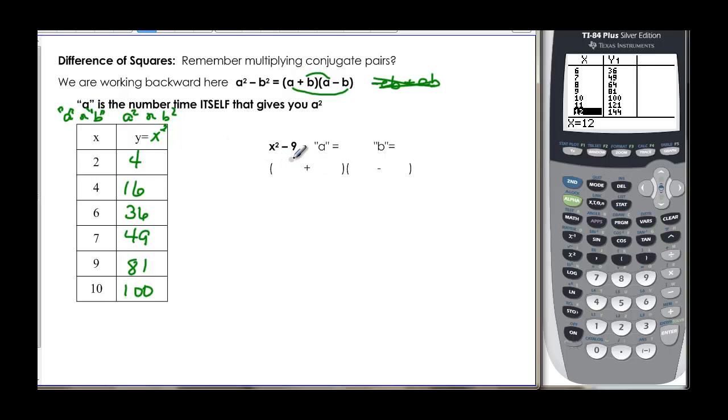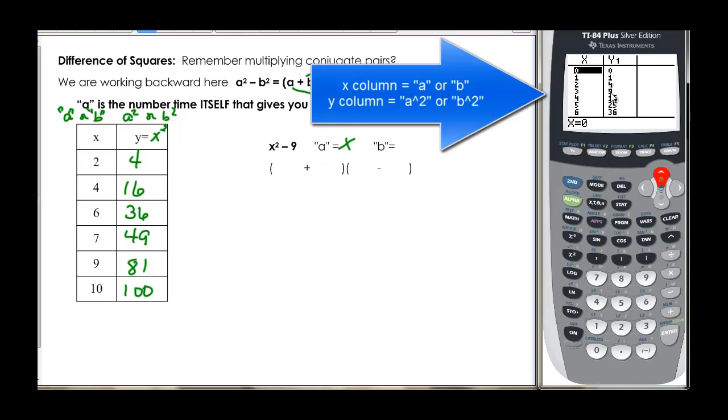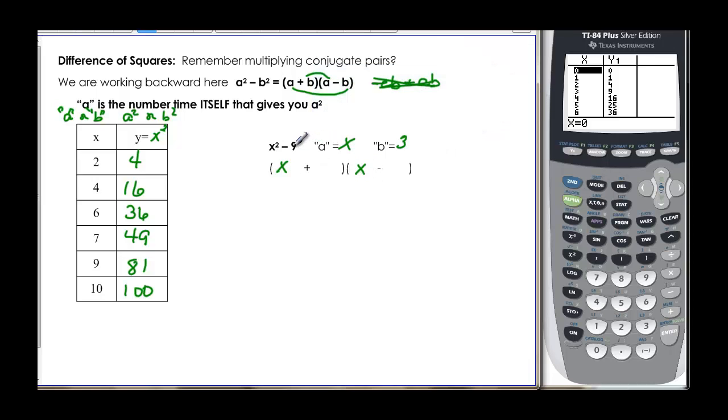So when we're looking at x squared minus 9, x times x is always going to be x squared, so a is always going to be x there, but I have a 9. When y was 9, my calculator table said that x was 3, so 3 is my b. All we have to do is write our first terms, because factors of the first term are first terms. So my x and my x, factors of the last term, that's my 3 and my 3. Then we do our opposite signs, and we're done factoring. These are really quite nice.